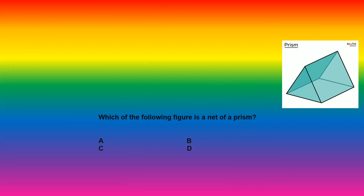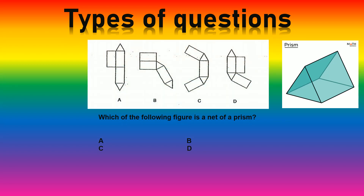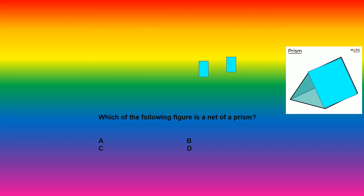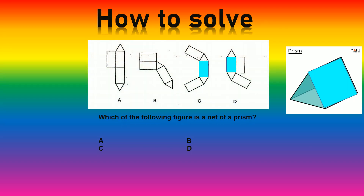Now, types of questions. Normally they'll give you a figure with 4 types of nets. So they'll ask: which one of the following figures is a net of a prism? Firstly, you take a red triangle, which is that side of the prism, and then you put it onto some of the red triangles, like so.